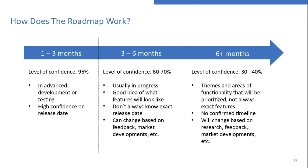Within the one-to-three-month horizon, we have very high confidence — items are either already in testing or in advanced development, and we will ask you to hold us accountable for those. The three-to-six-month horizon has a pretty high level of confidence — items are in progress and we have a good idea of what they'll look like, though the exact release date may not be confirmed. Beyond six months, things become more uncertain — we'll know the themes and areas of functionality we want to prioritize, but may not know exact features or confirmed timelines.